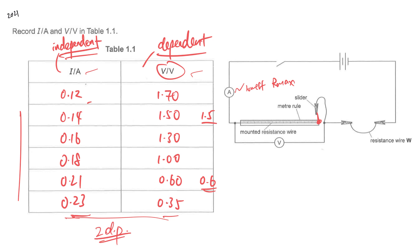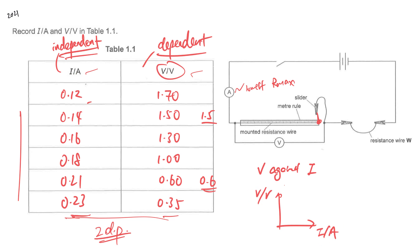Once the table is done, you can proceed to plotting the graph. If the question tells you to plot V against I, similar to your math where you plot y against x, your V has to be on the vertical axis and I on the horizontal axis. You label the axes following the header format. There will be another video on plotting of the graph.